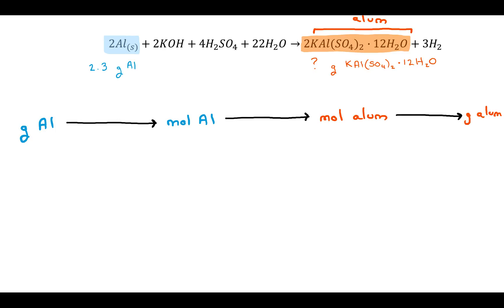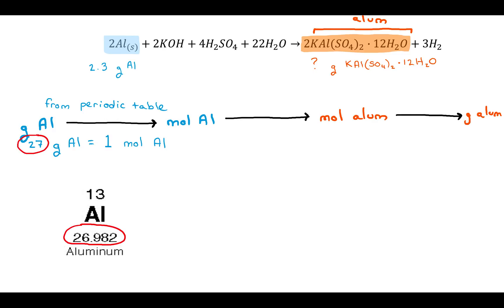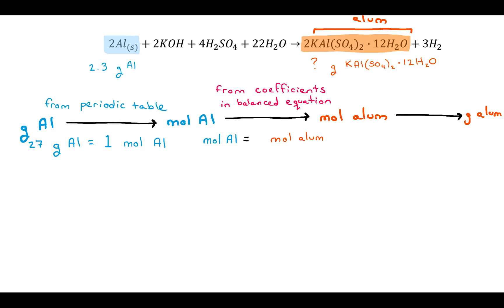Each conversion needs a conversion factor relating the two units. Starting with grams of aluminum to moles of aluminum: look up aluminum on the periodic table, where the atomic mass is about 27, so there are 27 grams of aluminum in every 1 mole of aluminum. Next, to relate moles of aluminum to moles of alum, use the coefficients from the balanced equation — there are 2 moles of aluminum for every 2 moles of alum.